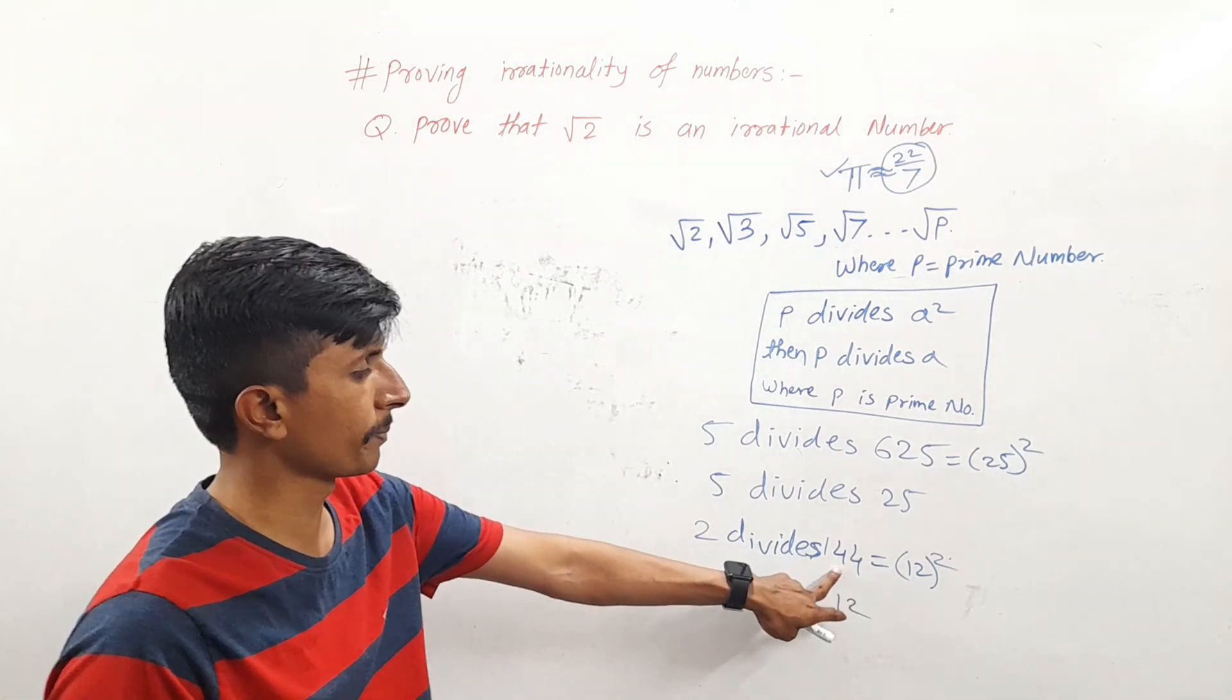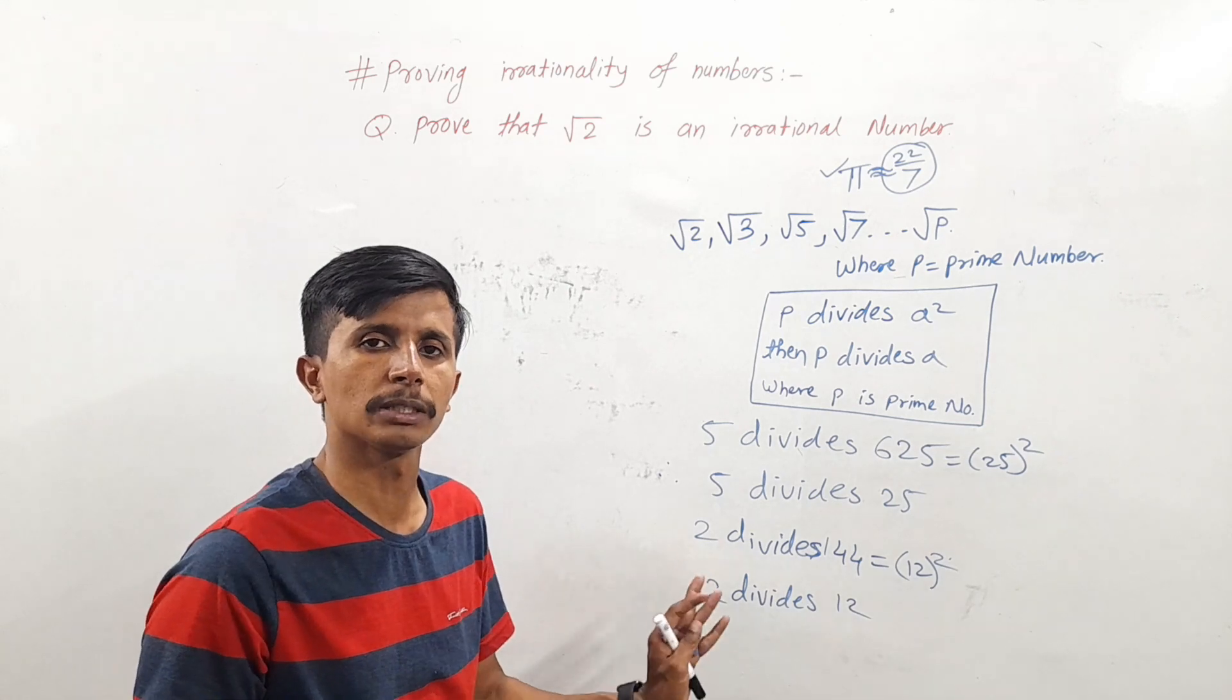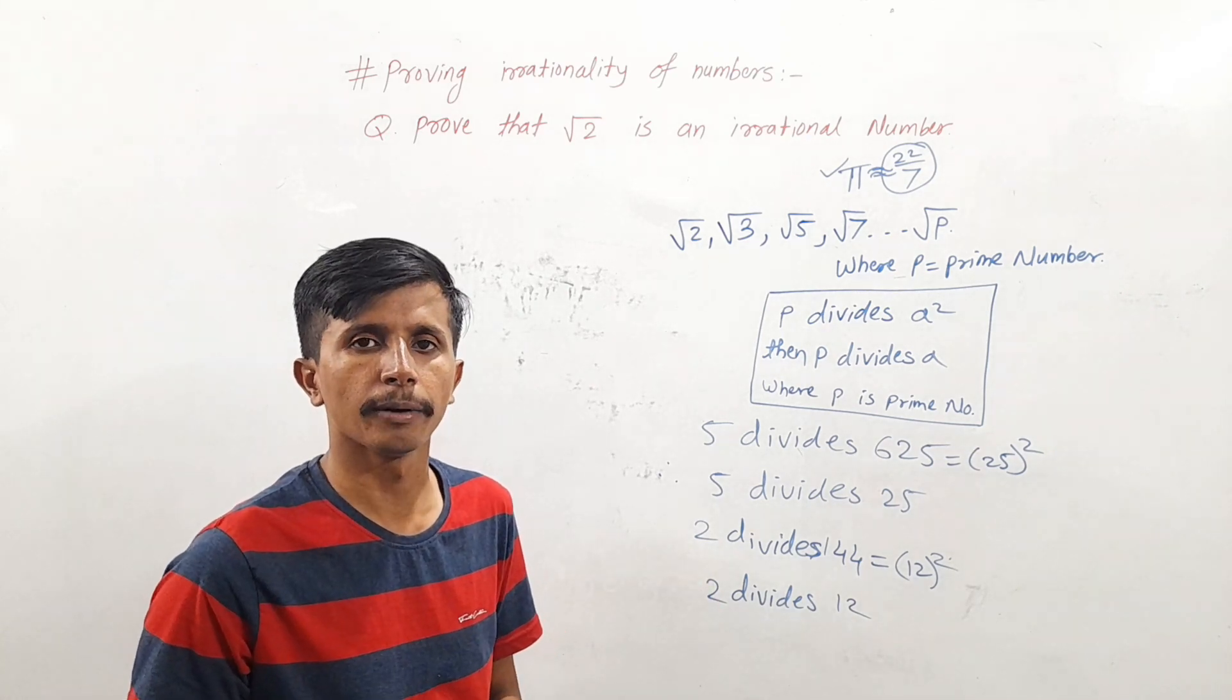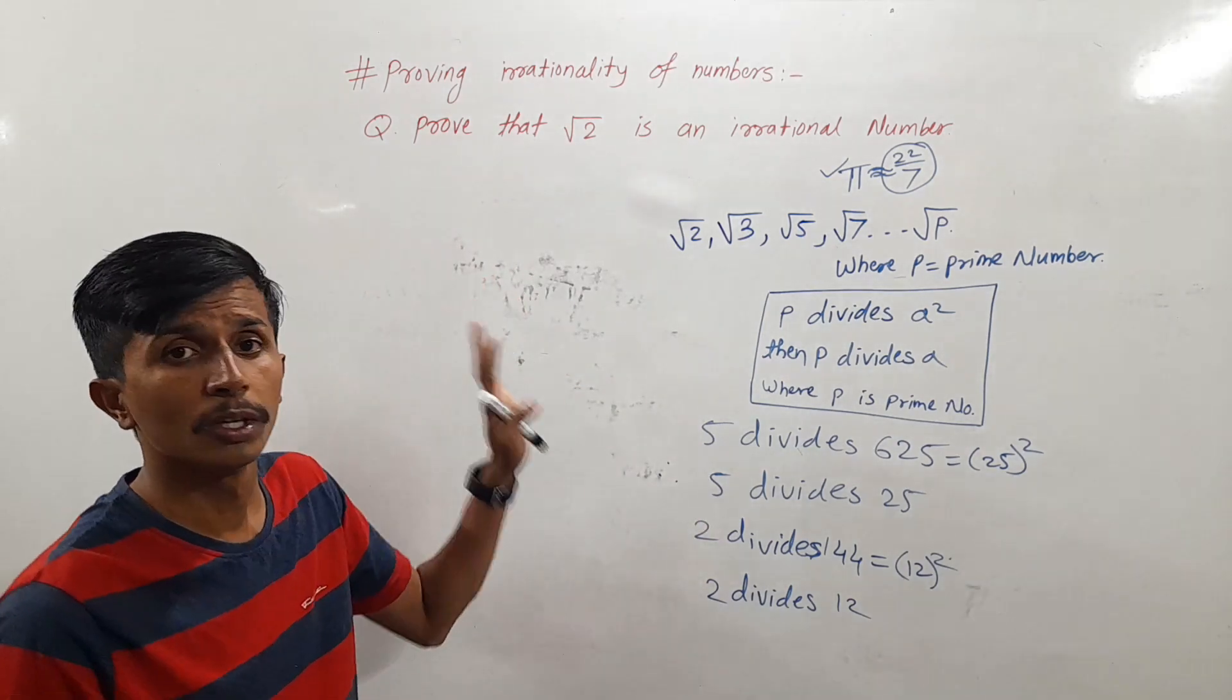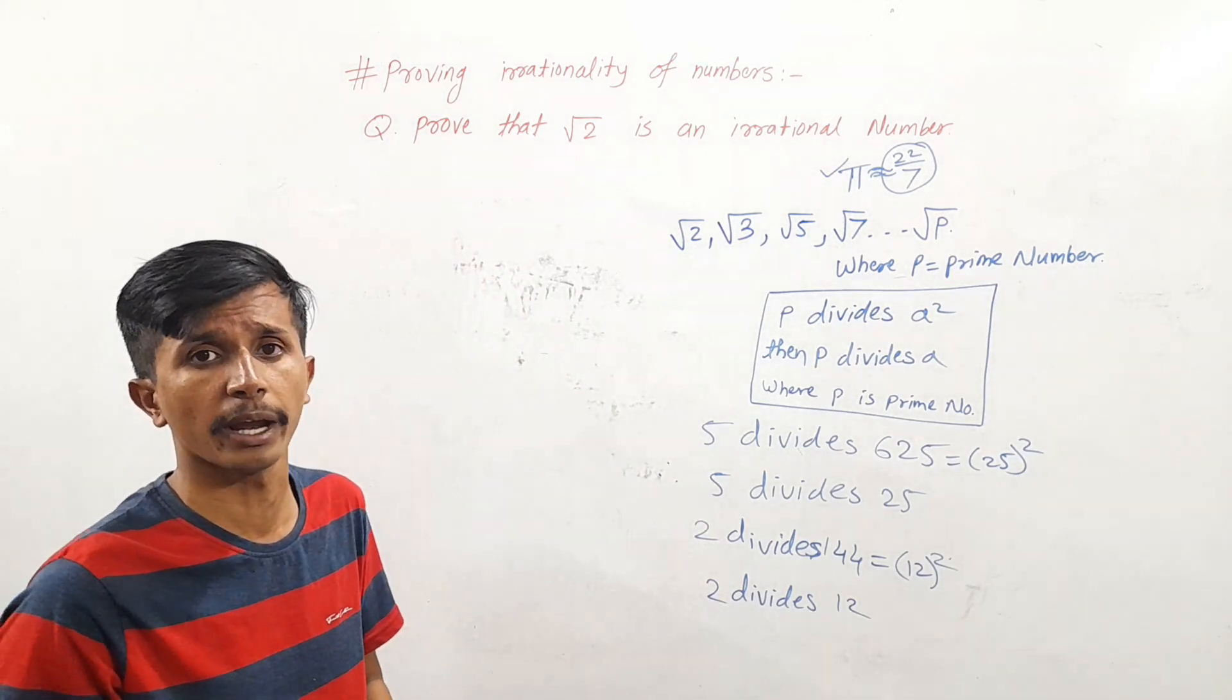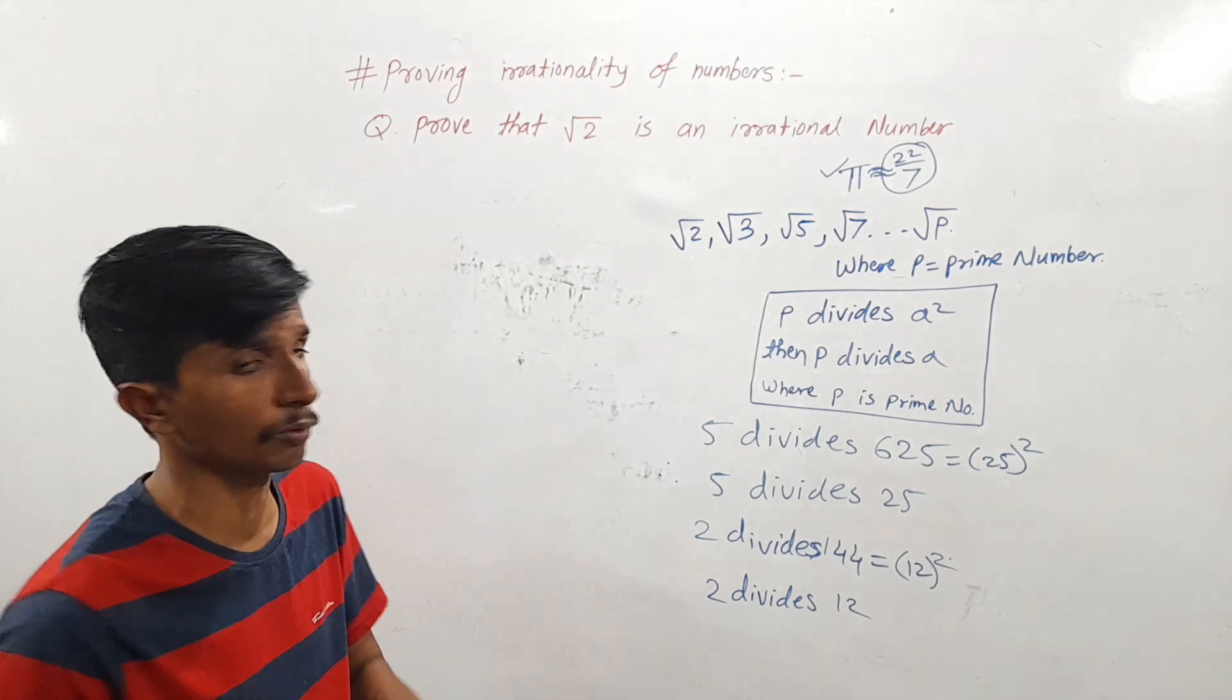So kabhi bhi koi perfect square hai, us perfect square ke square root ko bhi us same prime number se divide kiya ja sakta hai. This is the basic remark for this theorem. So ultimately, ye dimag mein rakhna and you will get the perfect answer. So we will start the first question.